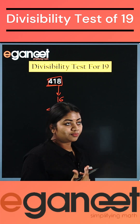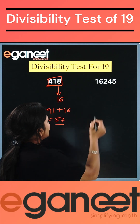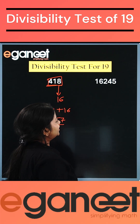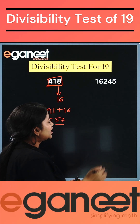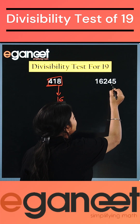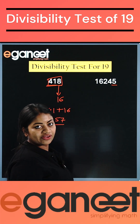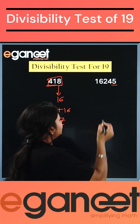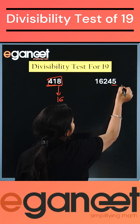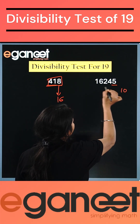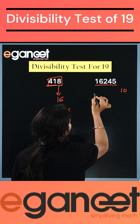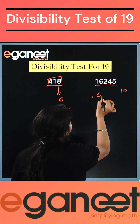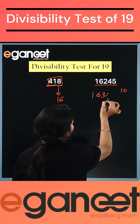Now let's take another bigger number — 16,245. The number at the units place is 5. If I double this, I get 10. Let's add 10 to the remaining number, so it will be 1,634.